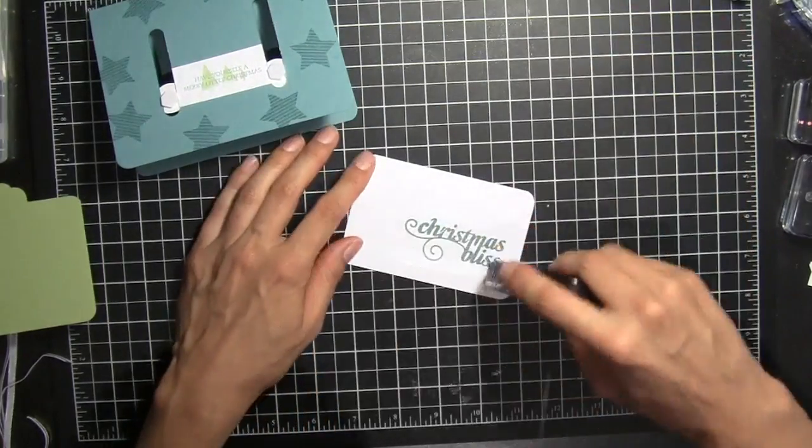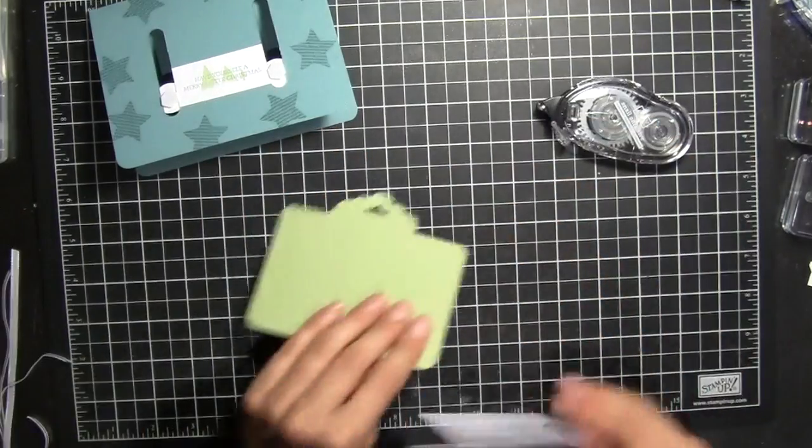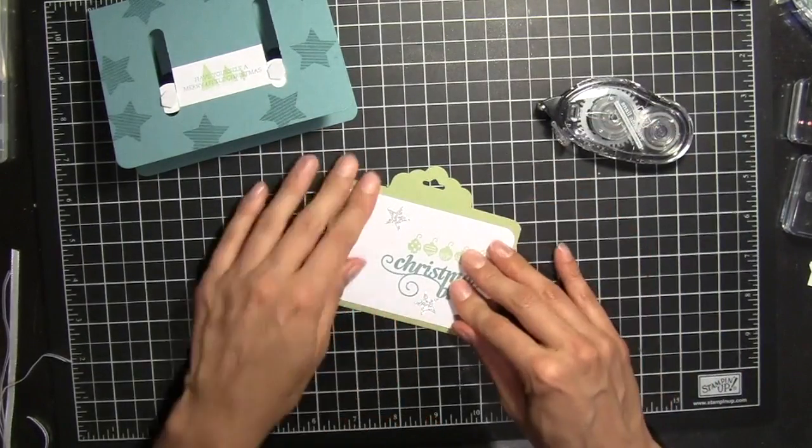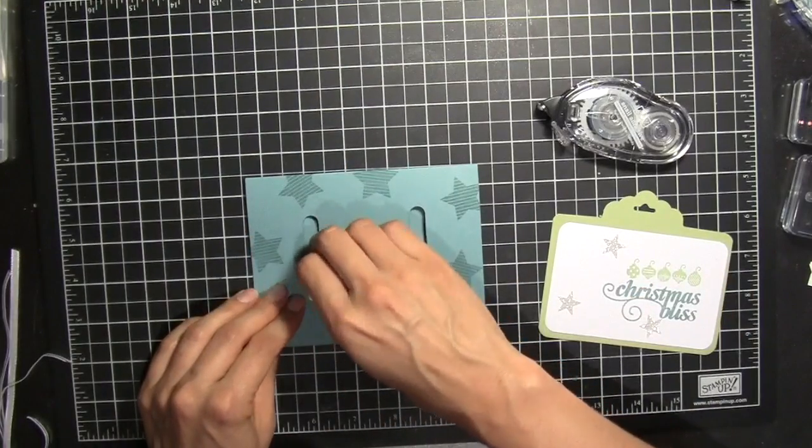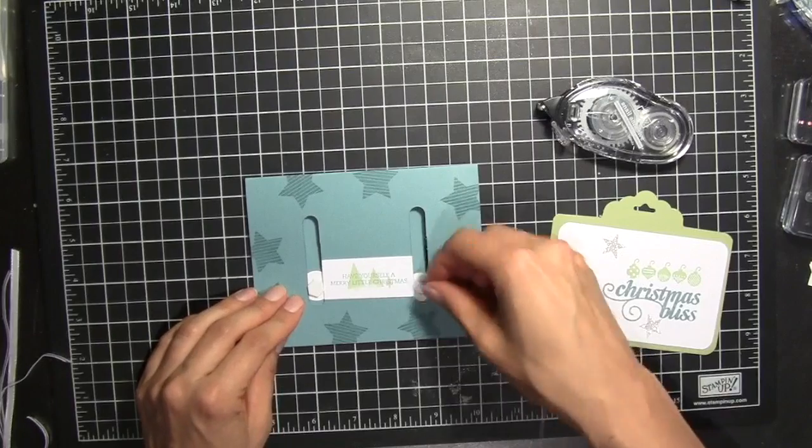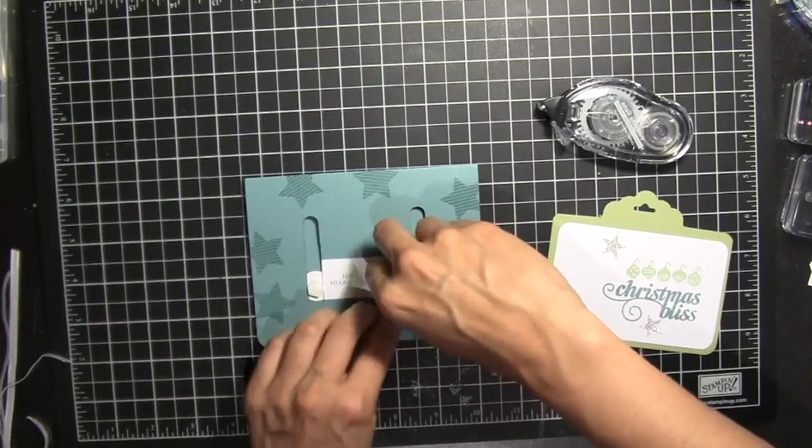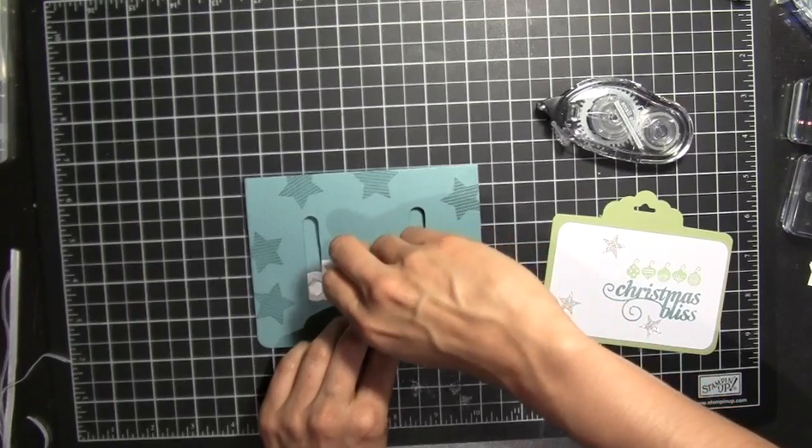And we're just going to go ahead and put this on top. This is going to be our piece that slides so now we can remove the top of the dimensionals.